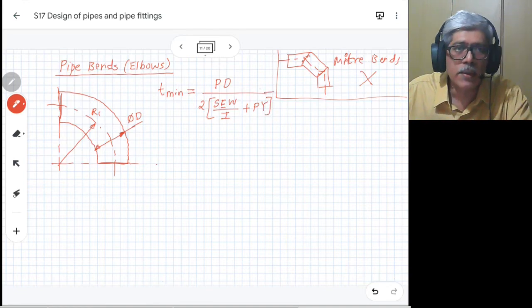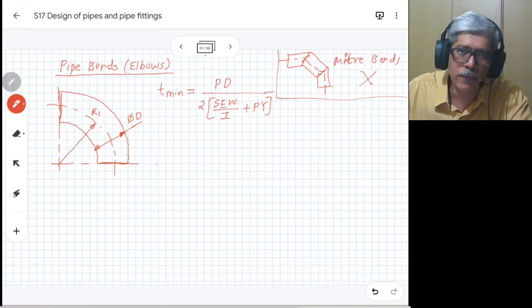Where all the terms: P is the pressure, D is the outside diameter, S is allowable stress, E is the joint factor, W is the factor which depends on the temperature, and Y is taken from the table.